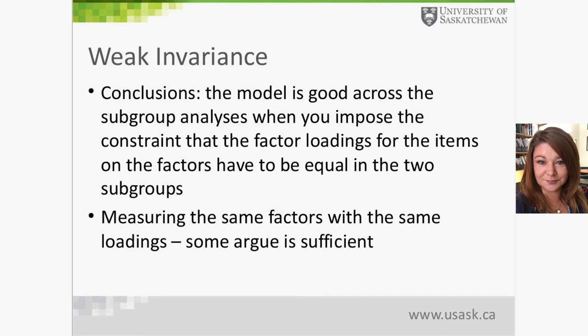This means the factor structure model is good across all subgroup analyses when you impose the constraint that factor loadings must be equal across groups. This means the same factors are being measured with the same factor loadings — which is pretty good evidence for factorial invariance, and in fact many would argue it is sufficient. This is as far as we thought we were going to go with these analyses, as it is as far as most people typically take them.